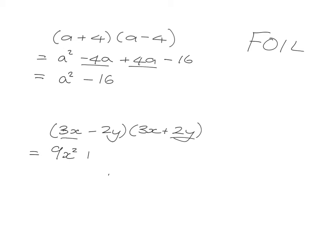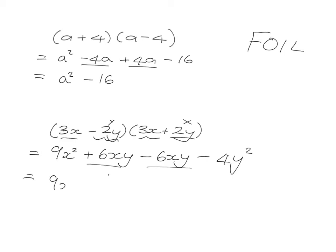For (3x-6y)(3x+2y): First — 3x times 3x gives 9x squared. Outside — 3x times 2y gives 6xy. Inside — negative 6y times 3x gives minus 6xy. Last — negative 6y times 2y gives minus 4y squared. Looking for like terms: plus 6xy and minus 6xy cancel out, giving 9x squared minus 4y squared.